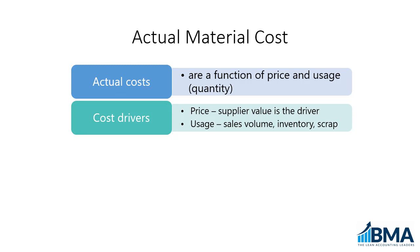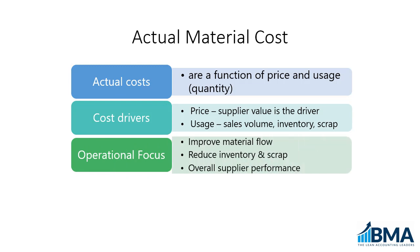And usage is about how much you're using to sell products, provide services, how much inventory you have, how much scrap you have. From an operational focus, you focus on improving material flow — that will reduce inventory and reduce the usage or the quantity. You focus on reducing scrap, and that's going to reduce the quantity.